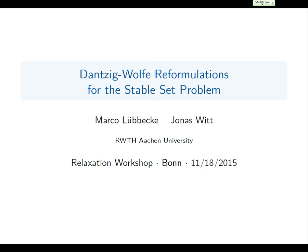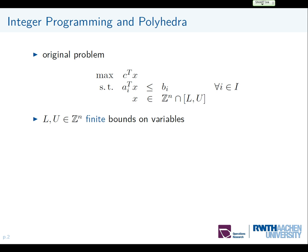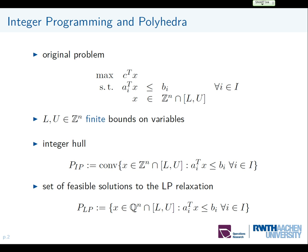We start with this integer linear program. We maximize the objective function C transpose X, and we have a constraint for each index in the index set I. We will have finite bounds on the variable. What we are interested in is the convex hull of integer feasible solutions — I will denote this with P_IP. Normally, we would solve the LP relaxation and optimize over the set P_LP, which is the set of LP feasible solutions.